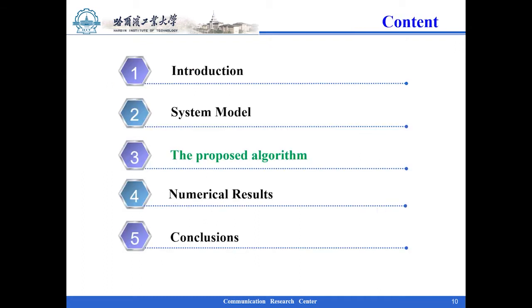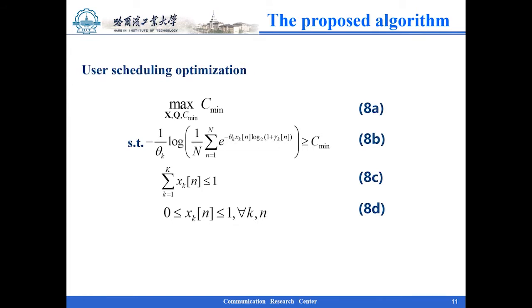Section 3: The proposed algorithm. Based on BCD method, problem 7 is divided into two parts. The first one is user scheduling optimization.